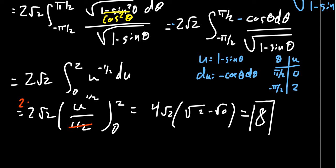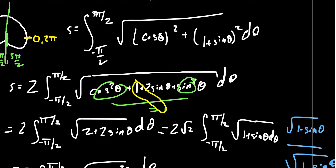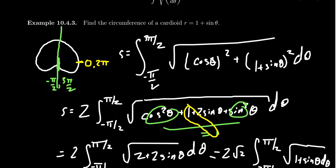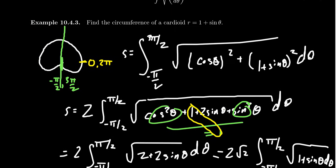I really like this result. We wanted the circumference of a cardioid — a shape like a circle that got stabbed, with a cusp where the circle was distorted. While the circumference of a circle is 2 pi r, the circumference of this cardioid is 8. There's no pi in the answer, which seems so bizarre given the curvature and trigonometry involved.